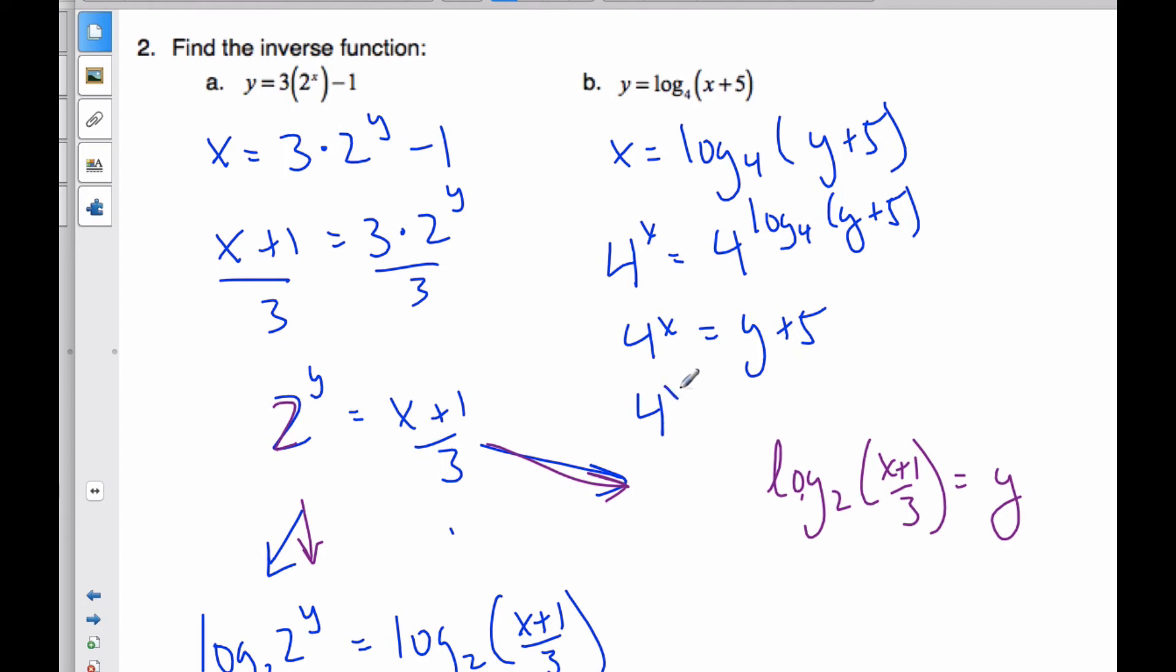Subtract the 5, so 4 to the x minus 5 is equal to y. And that is the inverse function. I could have also at this point, as opposed to applying an exponential to both sides, I could have rewritten it as 4 to the x is equal to y plus 5. And then y is equal to 4 to the x minus 5. So just a different conceptual approach, but both are equally valid.